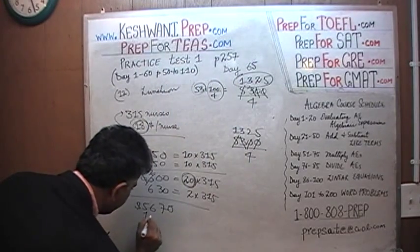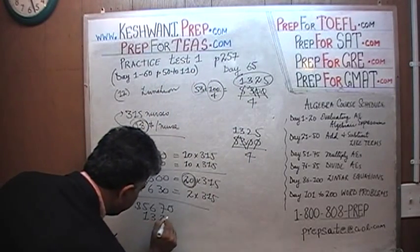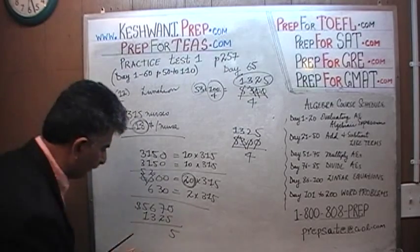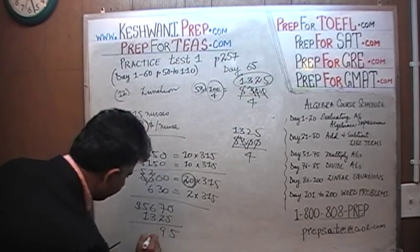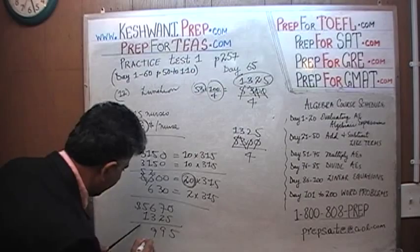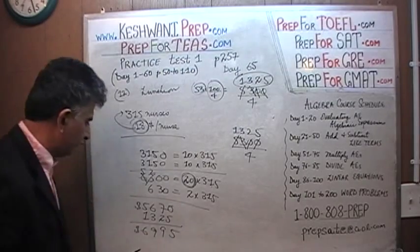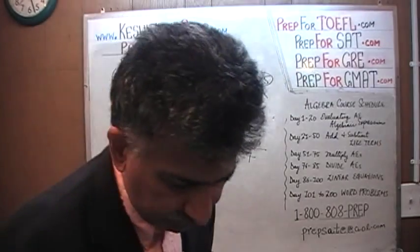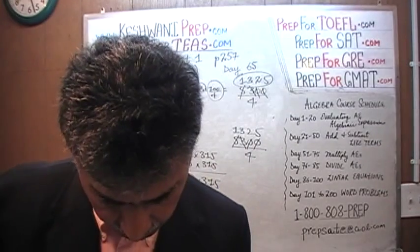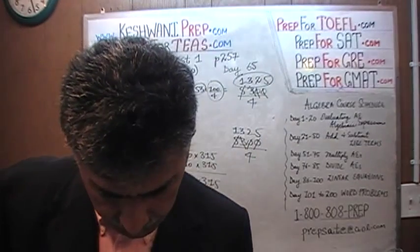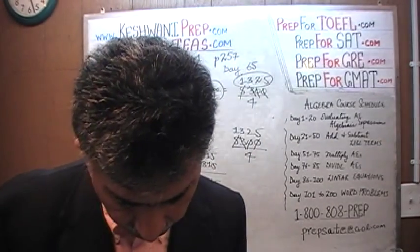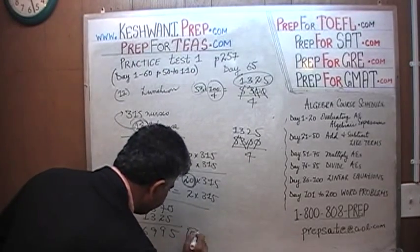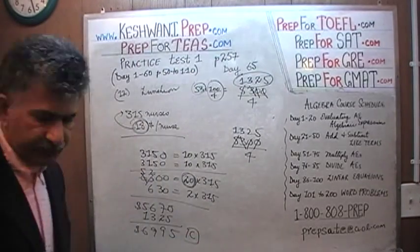So 1325 is the guests' cost. Adding: 5670 plus 1325. We get 5 at the ones, 7 + 2 = 9 at the tens, 6 + 3 = 9 at the hundreds, 5 + 1 = 6 at the thousands. That's $6,995. The answer is C.